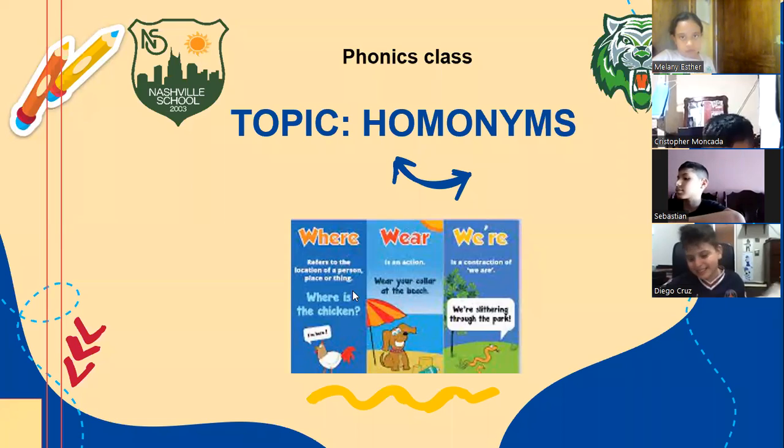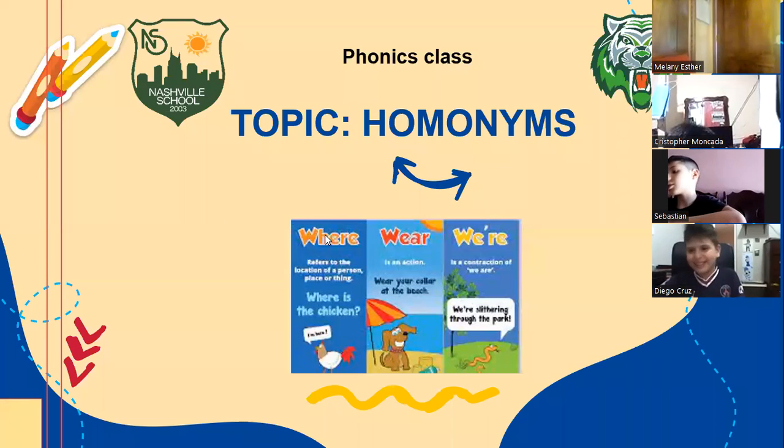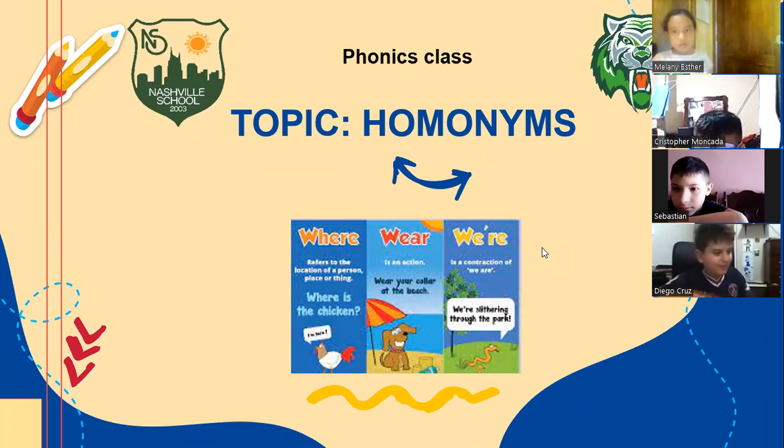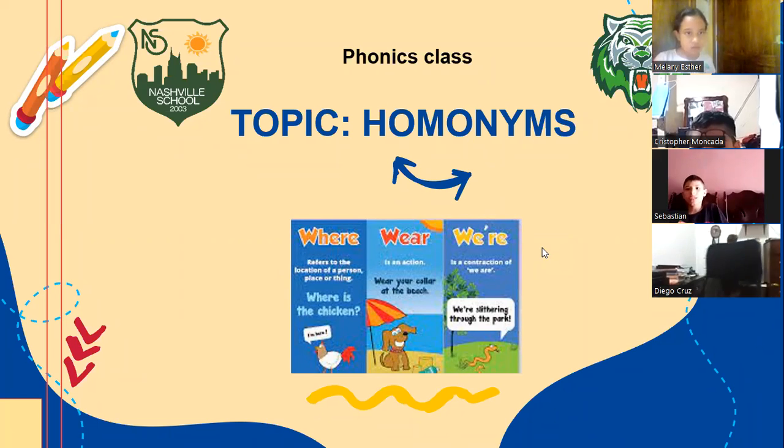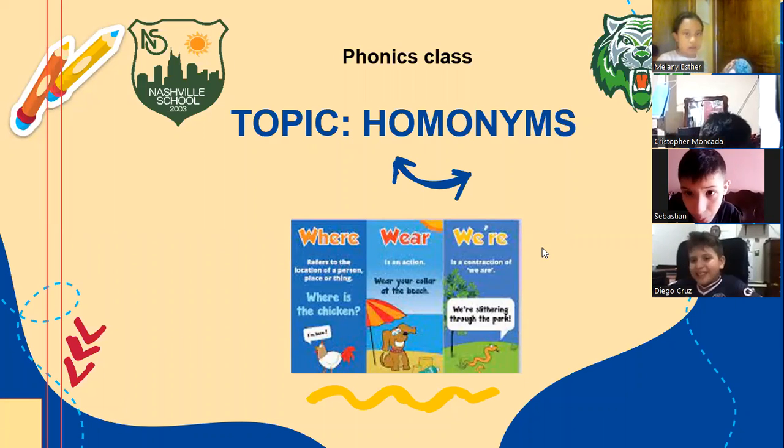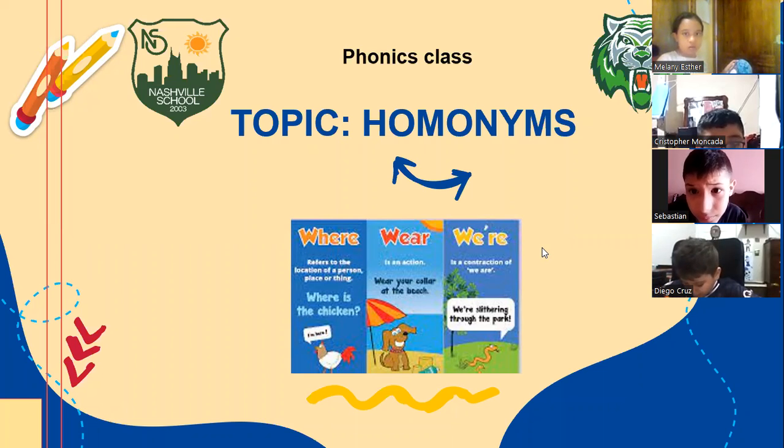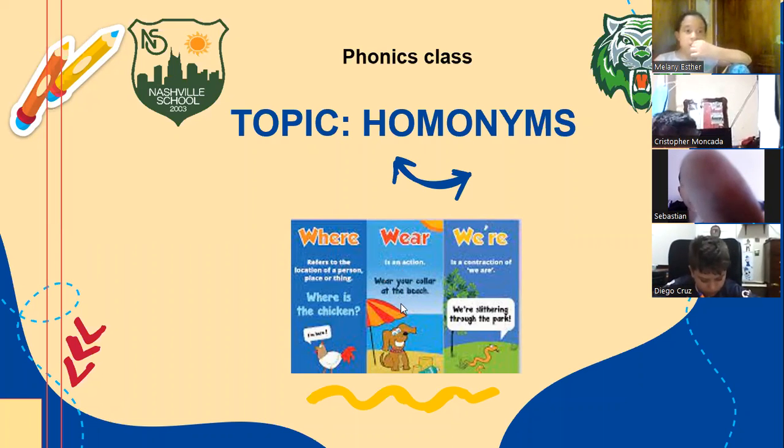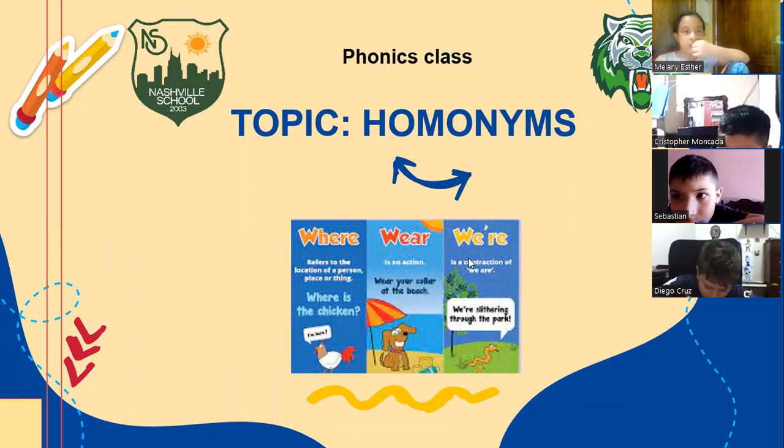Good afternoon guys, welcome to phonics class. Homonyms is our topic today. Look at these three words: where, wear, we're. The three of them sound exactly the same. Where refers to the location of a person, place, or thing. Wear is an action - wear your collar at the beach. We're is the contraction of we are - we're slithering through the park.